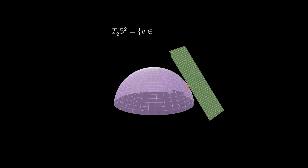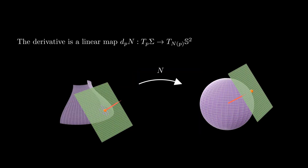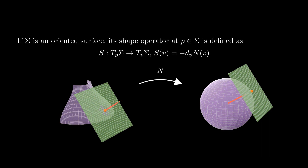Why? Let's just look at the sphere S² and take a point q. The tangent plane to S² at q consists precisely of the vectors perpendicular to q. So if q is n of p, this plane coincides with T_p sigma, the vectors perpendicular to n of p. The linear map that goes from T_p sigma to itself, that assigns to each vector v minus the derivative of n in the direction of v, is called the shape operator, and we denote it by S.